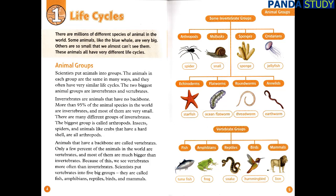Animals that have a backbone are called vertebrates. Only a few percent of the animals in the world are vertebrates, and most of them are much bigger than invertebrates. Because of this, we see vertebrates more often than invertebrates. Scientists put vertebrates into five big groups: fish, amphibians, reptiles, birds, and mammals.